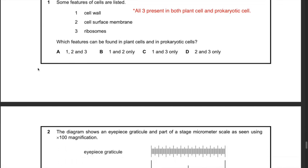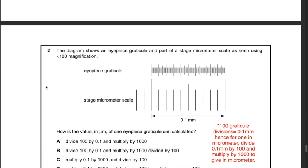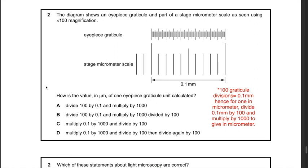Question 29: which features can be found in both plant cells and prokaryotic cells? Both have a cell wall (though the substance differs), both have a cell surface membrane, and both have ribosomes — plant cells have 80S cytoplasmic ribosomes but both also contain 70S ribosomes in their organelles; prokaryotic cells also have ribosomes. The best answer is A — 1, 2, and 3.